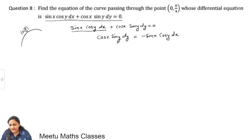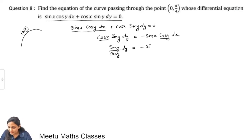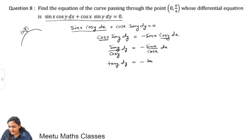This is a differential equation where the variables can be separated. Shift all y terms to one side and all x terms to the other side. sin y and cos y can be rearranged, so this becomes: tan y dy = −tan x dx.